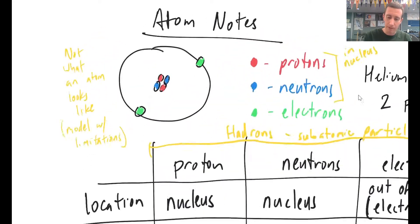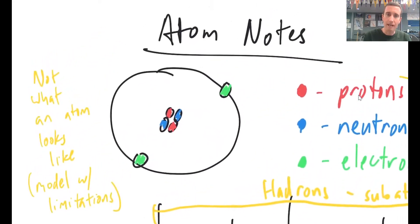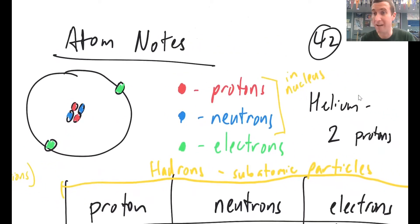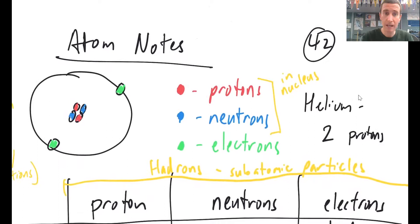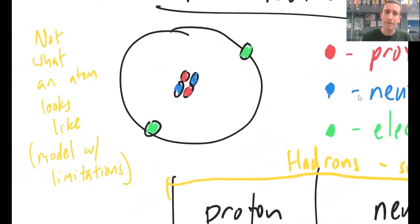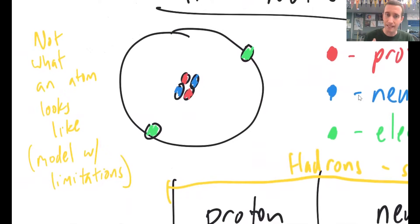So you may be familiar with some diagram kind of like this. In your science notebook, I have this on page 42. You can have it on whatever page works for you. So you may be familiar with some kind of diagram that looks something like this. There are some things in the middle that I've coded red and blue. There are some things on the outside that I've coded green. So this is a great model of an atom. But it's not actually what an atom looks like.